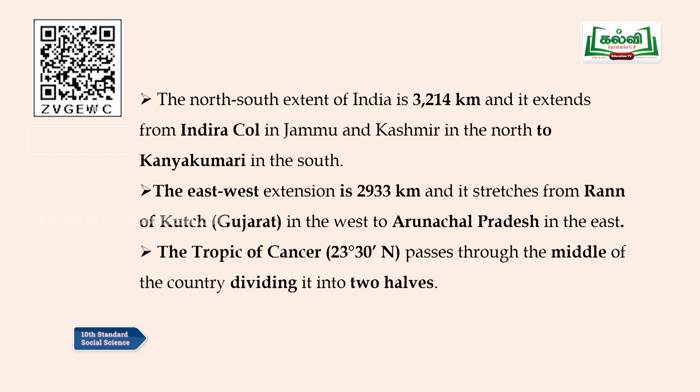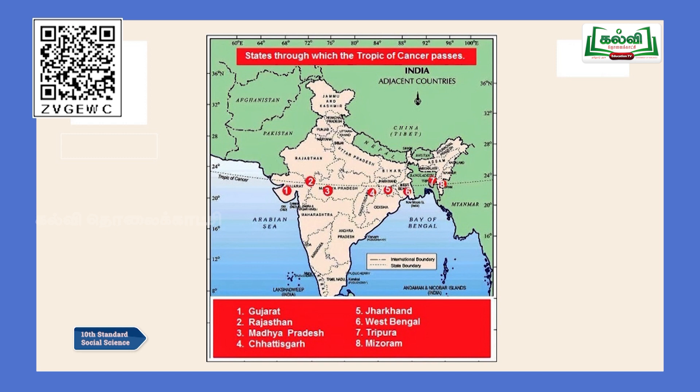The east-west extension is 2,933 kilometers, stretching from Rann of Kutch in Gujarat in the west to Arunachal Pradesh in the east. The Tropic of Cancer at 23 and a half degrees north latitude passes through the middle of the country, dividing it into two equal halves. The part north of the Tropic of Cancer is called non-peninsular India, and the part below it is called Peninsular India. The states through which the Tropic of Cancer passes are: Gujarat, Rajasthan, Madhya Pradesh, Chhattisgarh, Jharkhand, West Bengal, Tripura, and Mizoram.